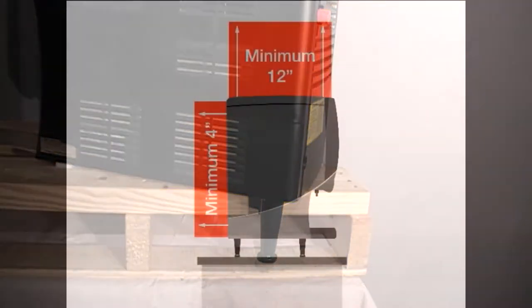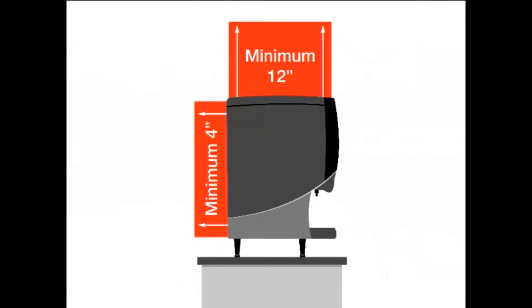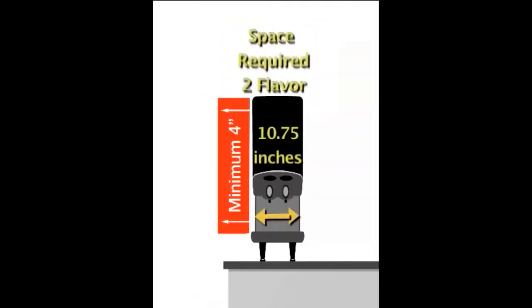With the legs installed, locate the unit allowing for 4 inches of clearance in the back and 12 inches of clearance on top, along with 4 inches of clearance for each side of the unit. The counter must be able to support 185 pounds.